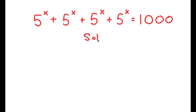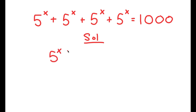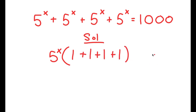For my solution, I'm going to first start by factoring out 5 to the power of x from my left-hand side, because as you can see, we have 4 of the same terms on my left-hand side, and the easiest way to go about solving this equation is to factor them out. So I get 5 to the power of x times — well, 5 to the power of x divided by 5 to the power of x is simply 1 — so I get 1 plus 1 plus 1 plus 1, which is equal to 1,000.